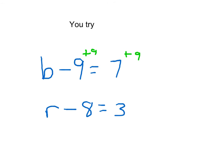Go ahead and hit pause. Okay, did you get B equaling 16? B minus 9 plus 9 would just leave us with B. And 7 plus 9 is 16.